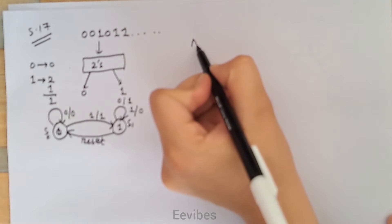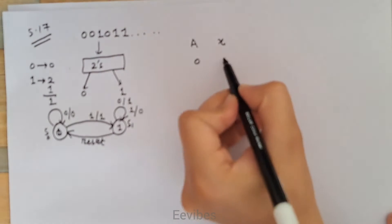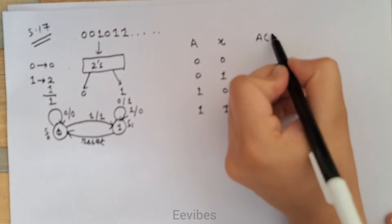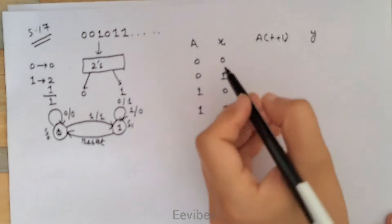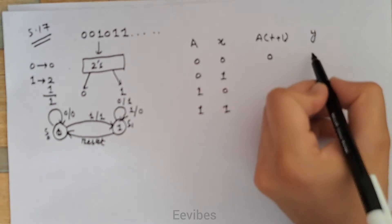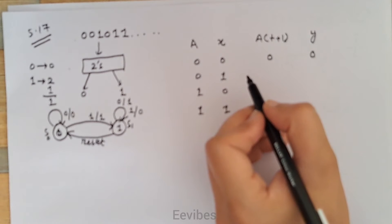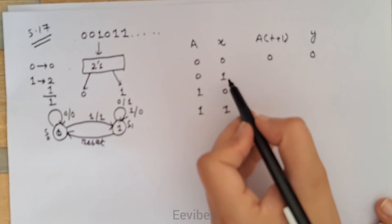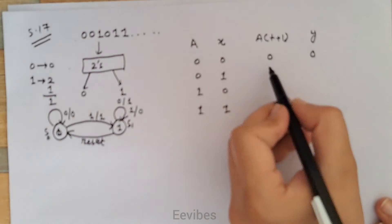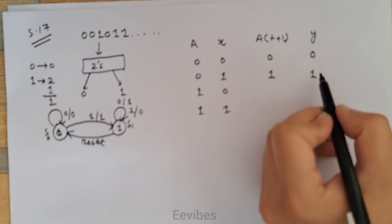We have one D flip-flop; let me mark the output of this D flip-flop as A and the input is represented by X. The two-bit binary combinations are: zero-zero, zero-one, one-zero, and one-one. The next state is A(t+1) and the output is denoted by Y. When input is zero and the current state is zero, next state will be zero and output will also be zero. When input is one and present state is zero, next state will be zero and output will be equal to one.